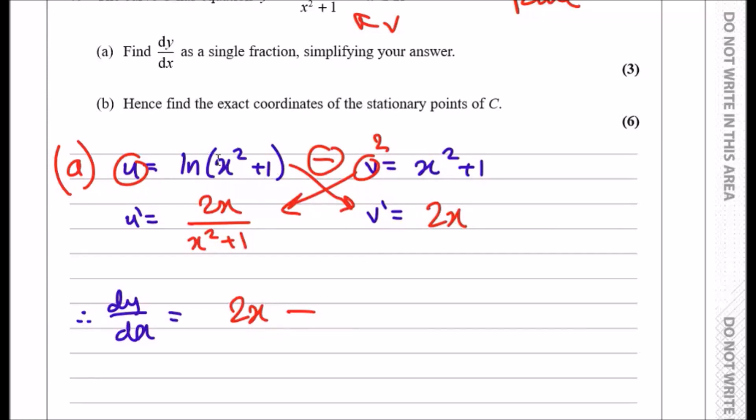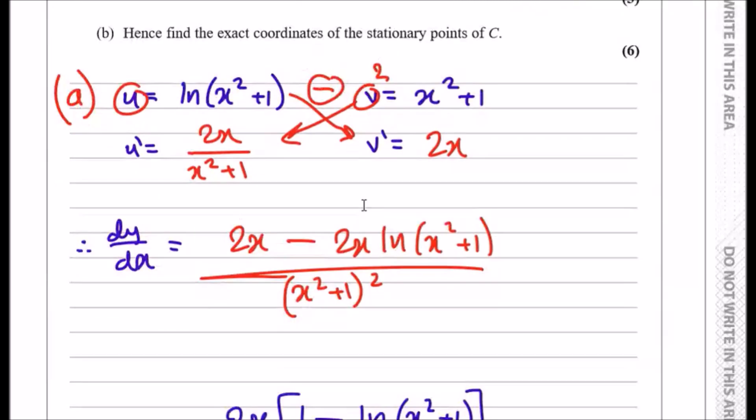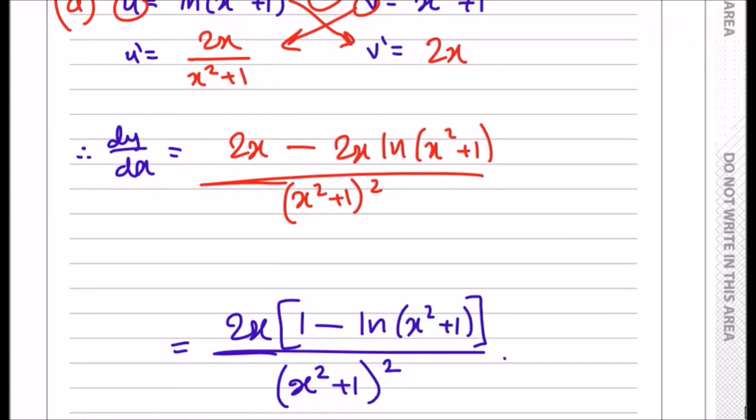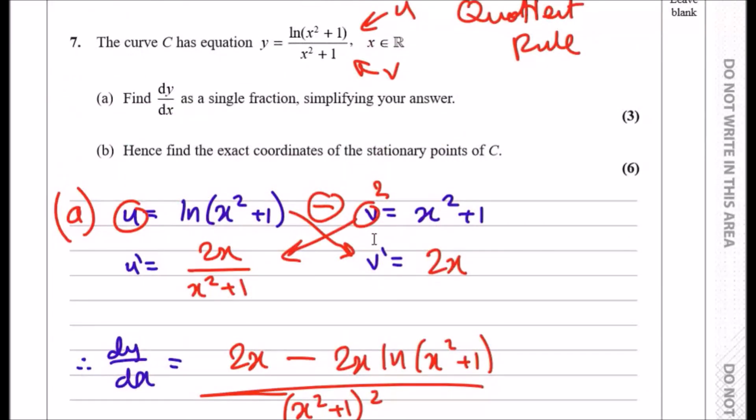Now we're going to subtract the other two multipliers, so it'll be 2x times the natural log, and it'll be all over v squared, so x squared plus one all squared. You can see on the top line that you can just factorize 2x out. So that's it. Let's look at part b now.